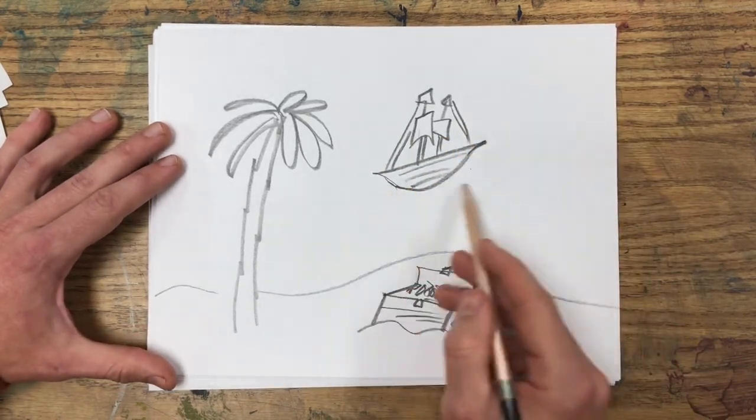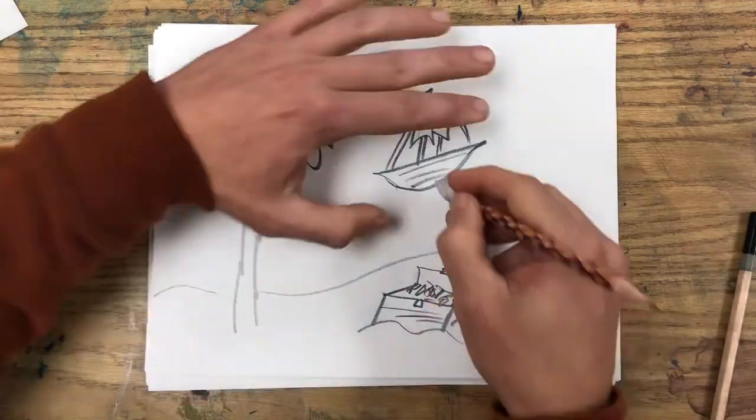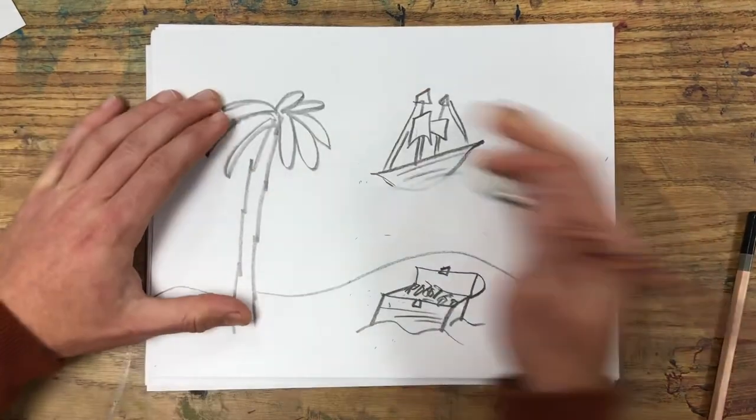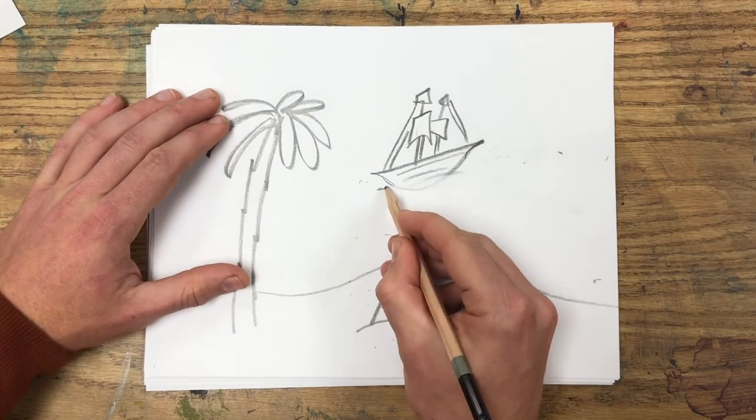Now we don't want this to look like it is completely floating above the water, so I'm actually going to erase out the bottom of that pirate ship and draw part of it sunk down into the water.